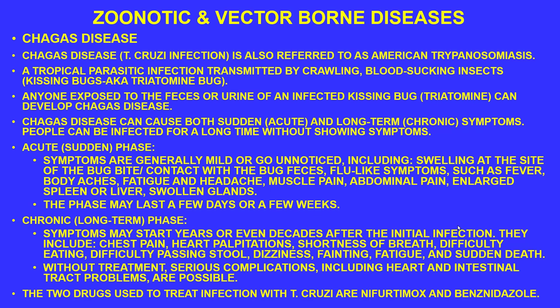Chagas disease can cause acute and long-term chronic symptoms; people can be infected for a long time without symptoms. Acute symptoms include swelling at the bite site, flu-like symptoms, fever, body aches, fatigue, headache, muscle pain, abdominal pain, enlarged spleen or liver, and swollen glands — lasting days to weeks. Chronic symptoms may appear years or decades later and include chest pain, heart palpitations, shortness of breath, difficulty swallowing, difficulty passing a stool, dizziness, fainting, fatigue, and sudden death. Charles Darwin is believed to have suffered the chronic form in his later years.